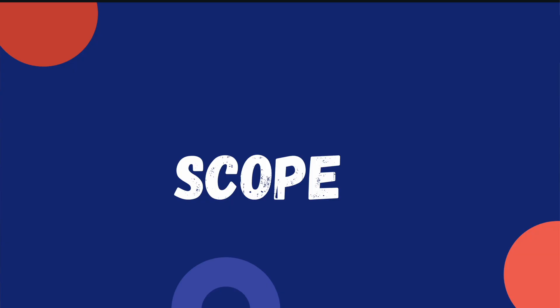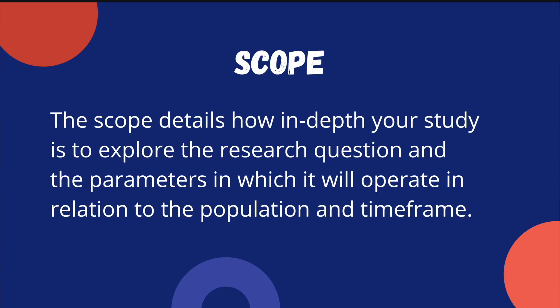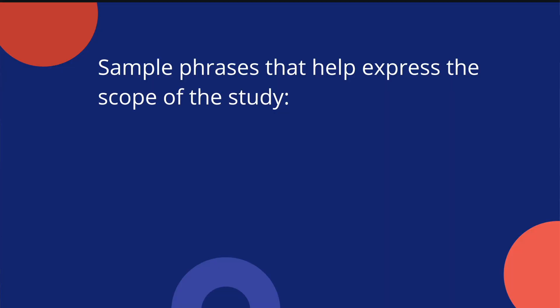Now let's proceed to understanding the scope of the study. When we say scope, these are the details of how in-depth your study is to explore the research question and the parameters within which it will operate in relation to the population and time frame. When we say population, these are the groups of people that you are going to involve in your study. Here are some phrases that you can use in writing the scope of your study.